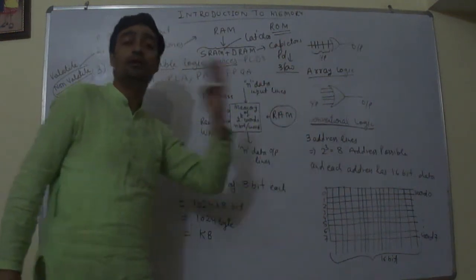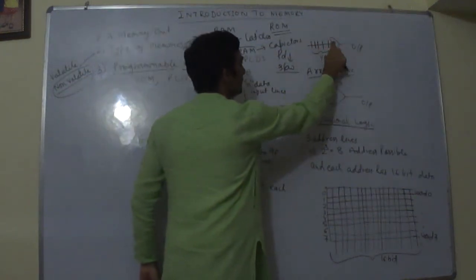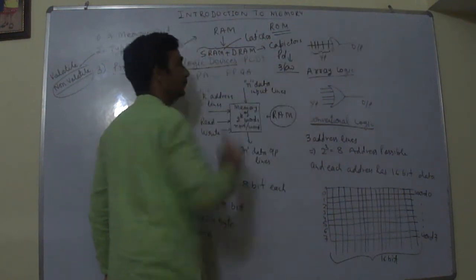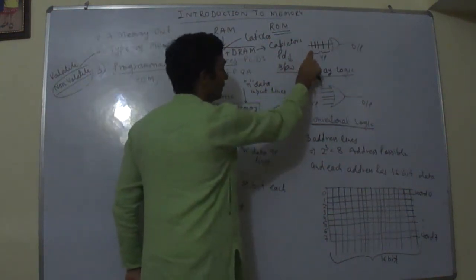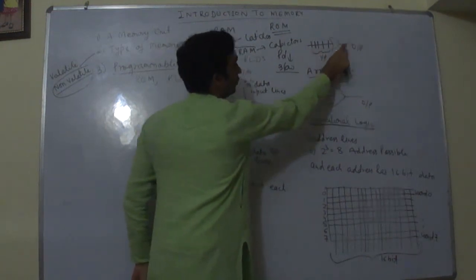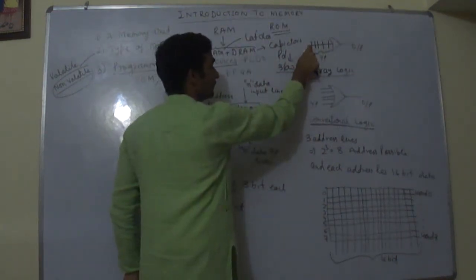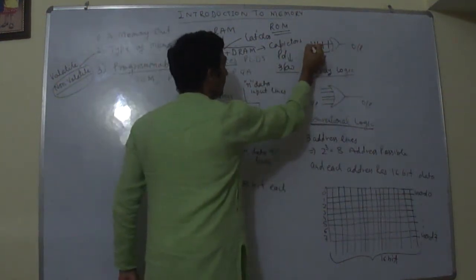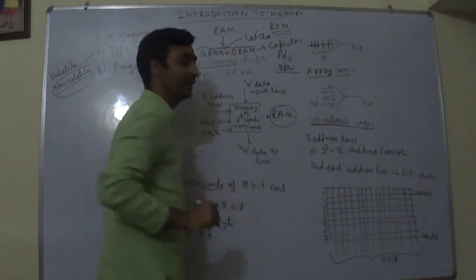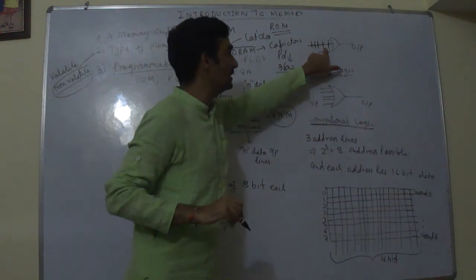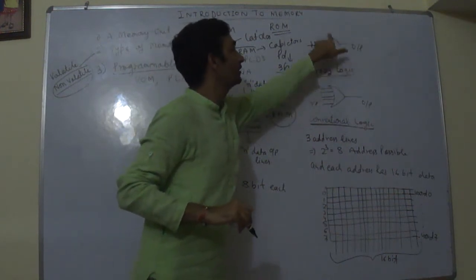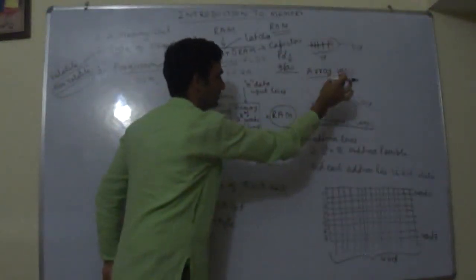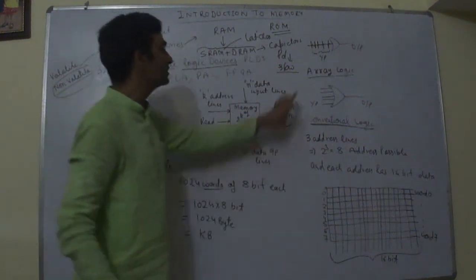Now if same is to be represented using array logic, then this is input line connected to OR gate and there are 5 input lines. Now which input line data is to go to the output side, it depends which one is fused and which one is blown. So there are basically fuses, connections. So wherever there is a connection, that means its input will be calculated according to OR operation and will reach to the output. So this is array logic and this is conventional logic. Now onwards we will be using array logic.